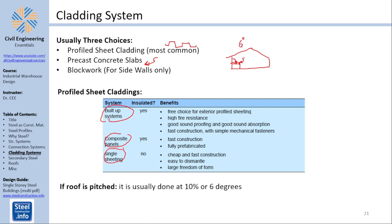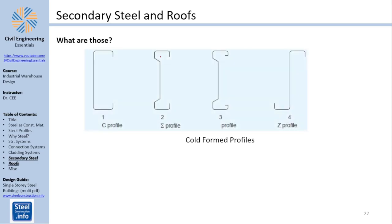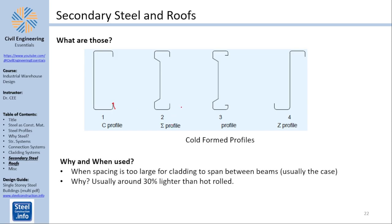Secondary steel and roof. You usually do this using cold-formed profiles. You have Z profile, sigma profiles and so on and those are usually very thin. This is usually used for purlins. When do you use purlins? You use purlins when the span of the cladding is too large which is usually the case. Why do you use cold-formed C sections not hot rolled? Because they're usually 30 percent lighter because the thickness is smaller.